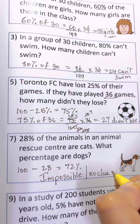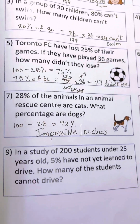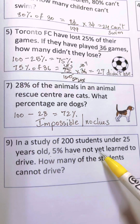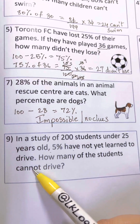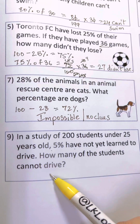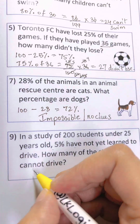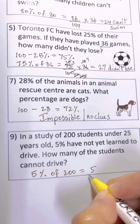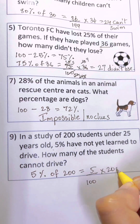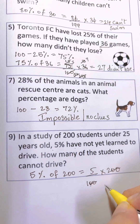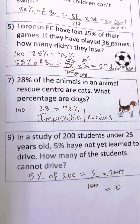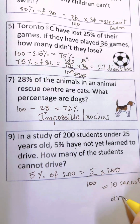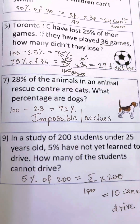If they give you more clues you can answer that question. Question number nine: in a study of 200 students under 25 years old, 5% have not yet learned to drive — how many cannot drive? 5% of 200: 5 over 100 times 200, cross out the two zeros, 5 times 2 is 10. So there are 10 students who cannot drive.